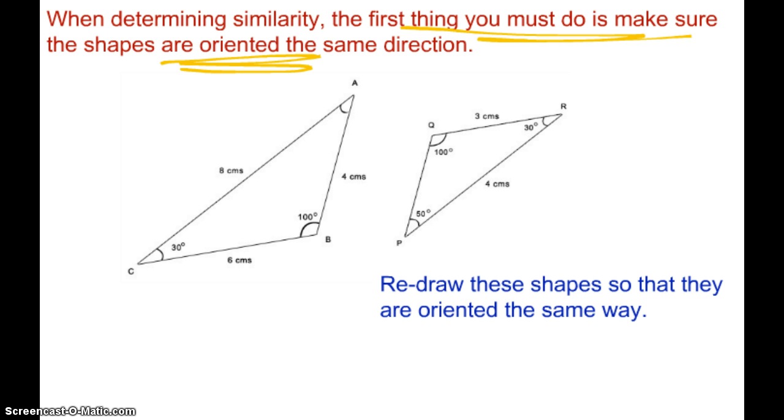It's really hard, what do I mean by oriented the same direction? See how this triangle is sitting on this obtuse angle, but this triangle is not? Well, it's really hard to determine the corresponding sides and corresponding angles because they're not facing the same way.